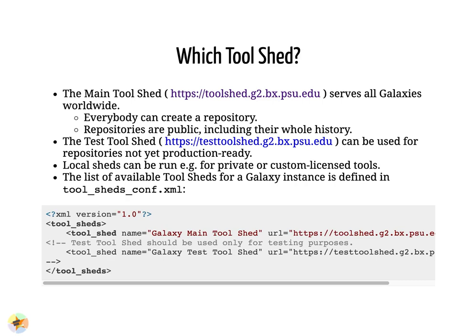When we talk about the tool shed, we're talking about the main tool shed, but there can be others. The test tool shed can be used for repositories that are not yet production ready. The tool shed is a web app backed by a database and anybody can run one, but it's discouraged to run a local tool shed. By default, Galaxy only accepts tools from the main tool shed. The list of accepted tool sheds is in a file called toolsheds.conf, which by default contains only the main tool shed, though there is a commented-out test tool shed entry.